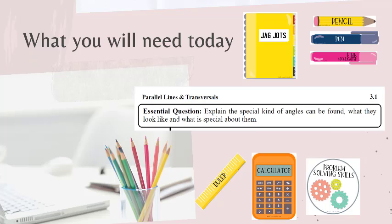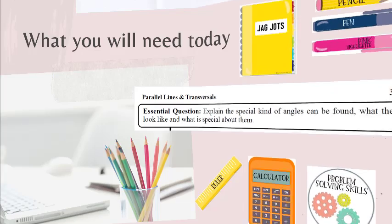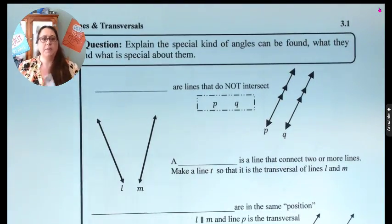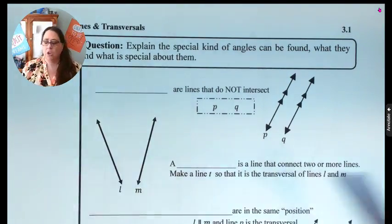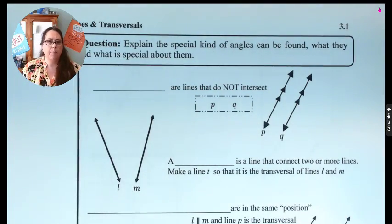Today you will need a pen or a pencil. Highlighters are really useful when we're looking at parallel lines and transversals. A ruler might be useful, a calculator, and always bring your problem-solving skills. Please make sure you're in Chapter 3 of your Jaguar Jots, and it says 3.1 at the top.